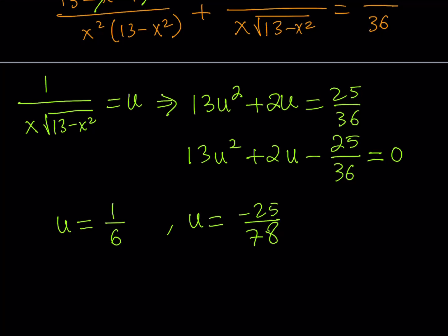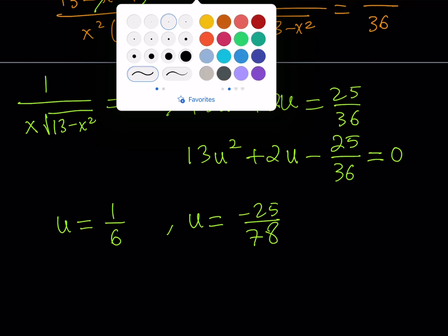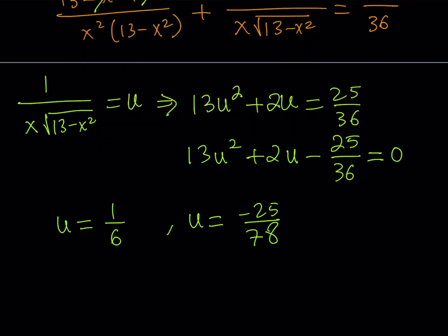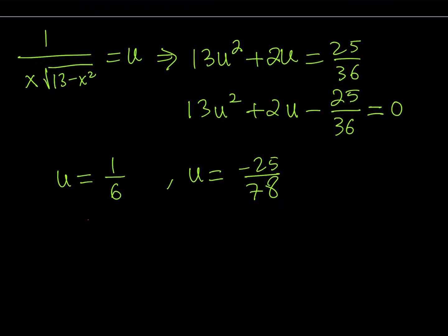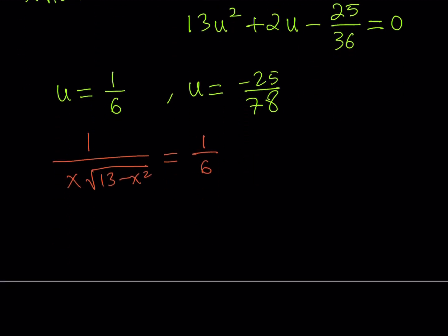Now, how did it go from the u values to the x values? Simple. We're just going to back substitute, right? We're just going to go ahead and replace u with 1 sixth, for example. So if I do this, 1 over x times the square root of 13 minus x squared is equal to 1 over 6. Obviously, in this case, you can just go ahead and cross multiply. Let's go ahead and do one of them. And the other one again, I'll give you the answer. Okay. So we get x times the square root of 13 minus x squared is equal to 6.